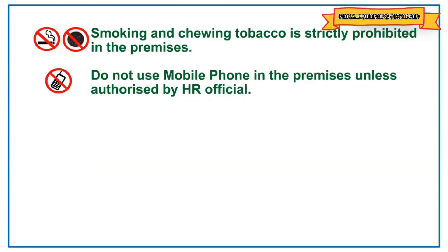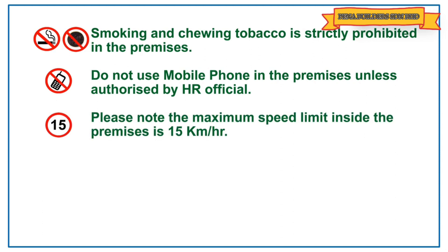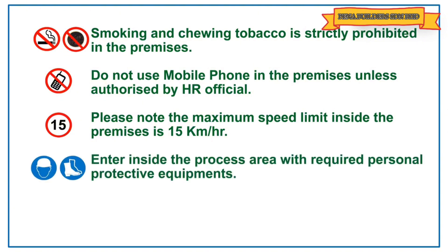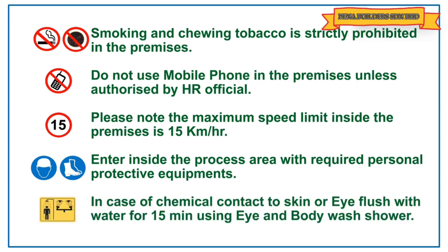General safety instructions at site: smoking and chewing tobacco is strictly prohibited on the premises. Do not use mobile phones on the premises unless authorized by an HR official. The maximum speed limit inside the premises is 15 kilometers per hour. Enter the process area with required personal protective equipment. In case of chemical contact to skin or eye, flush with water for 15 minutes using an eye wash and body wash shower.